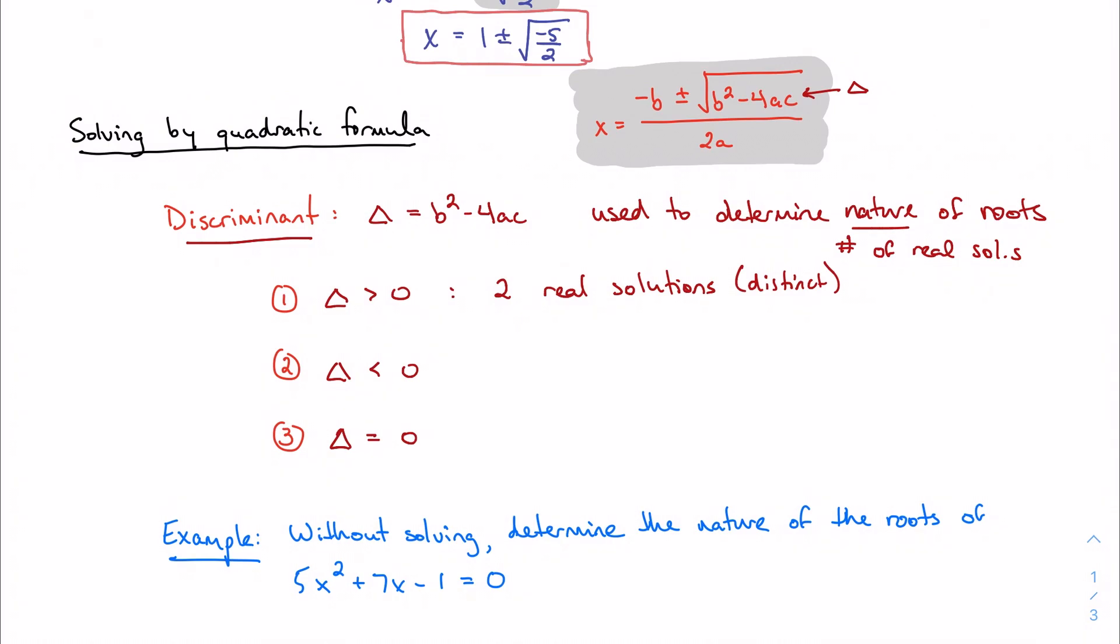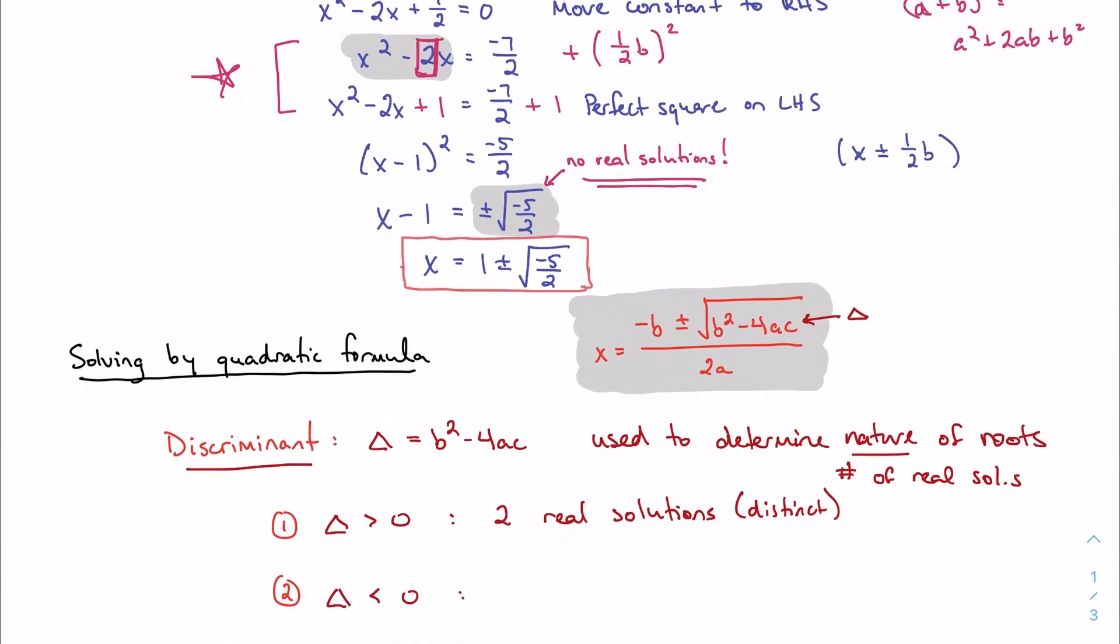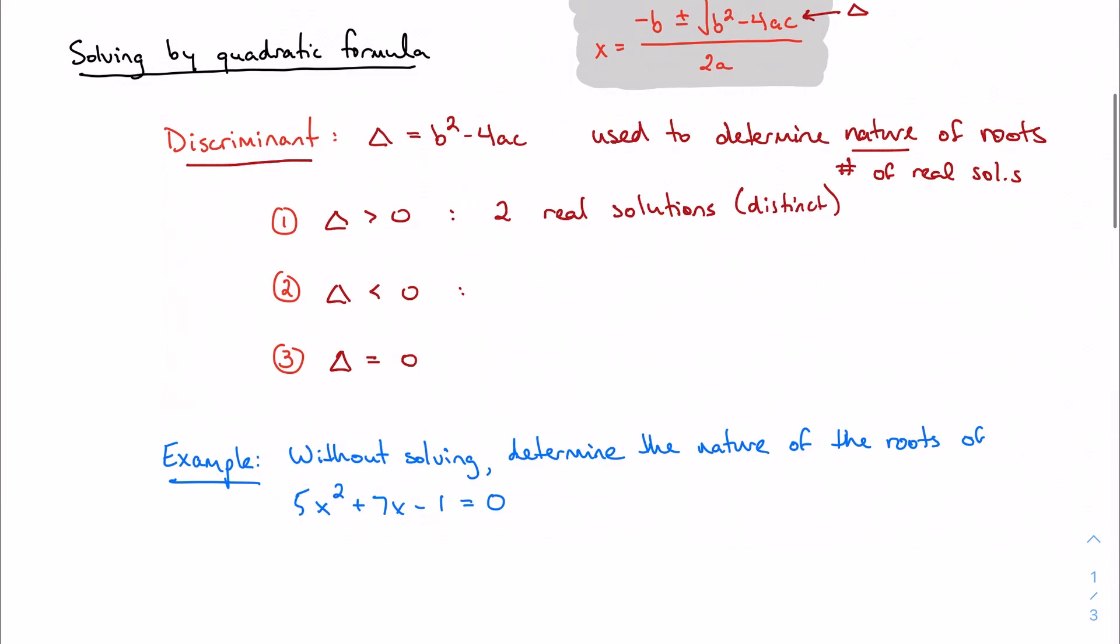Let's consider kind of the opposite case, which is if my discriminant was negative. And if my discriminant was negative, then I'm trying to take the square root of a negative number, and that's not going to give me a real answer, as we saw up here. So this is going to give me no real solutions.